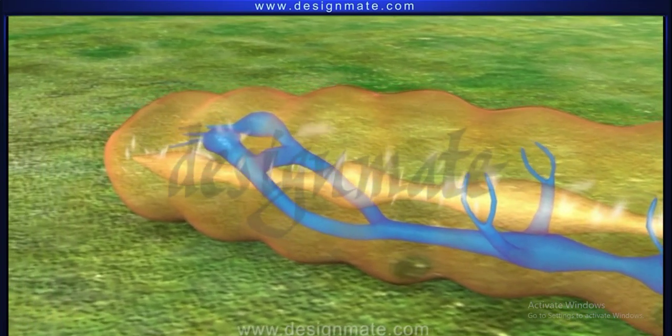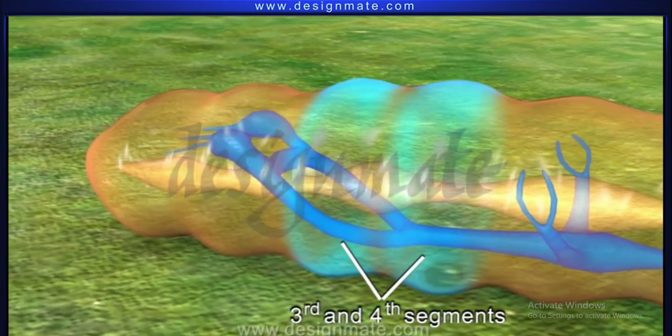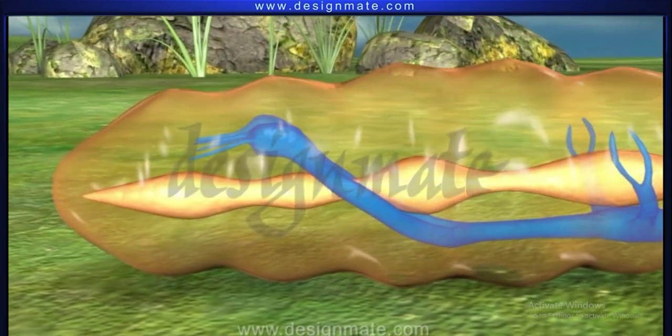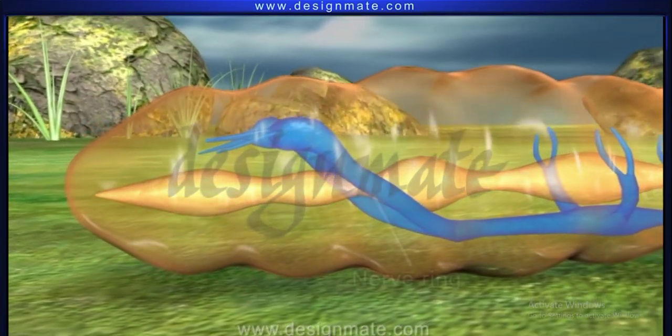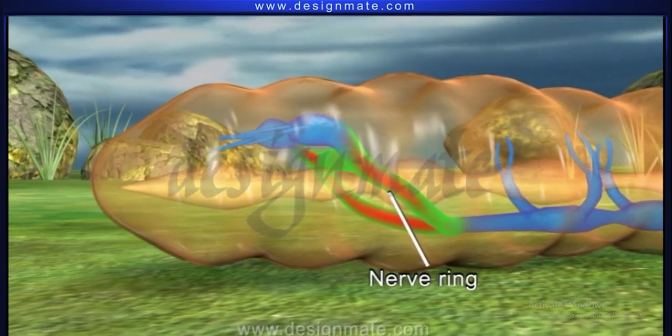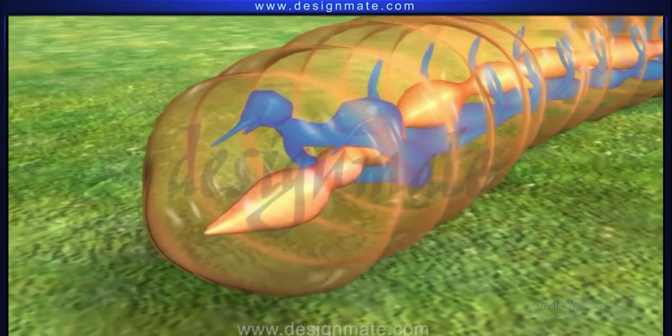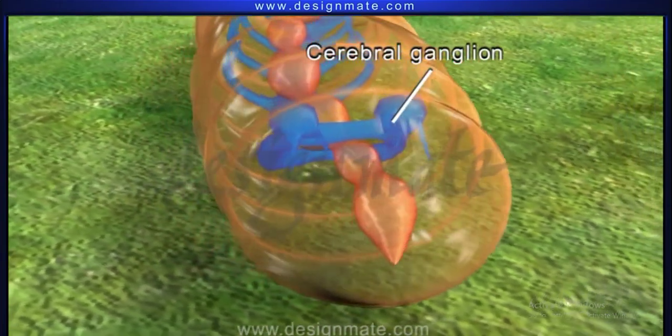The nerve cord is located in the third and fourth segments, bifurcates to encircle the pharynx laterally and then unites dorsally to form a nerve ring. The nerve ring along with cerebral ganglia forms the brain.